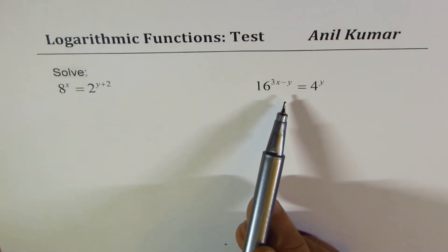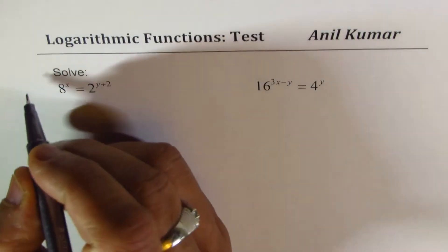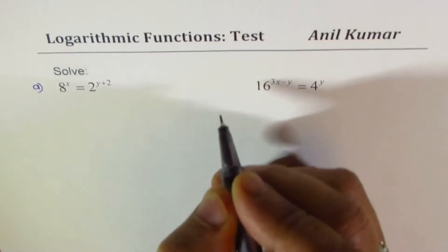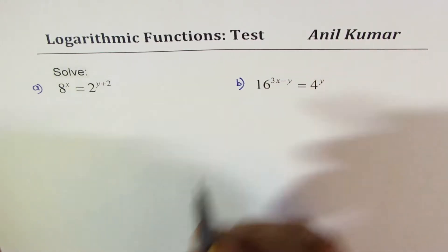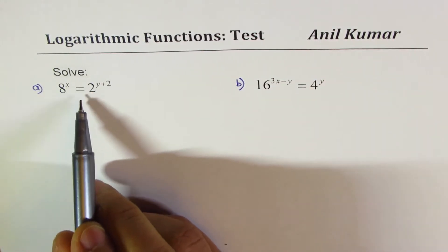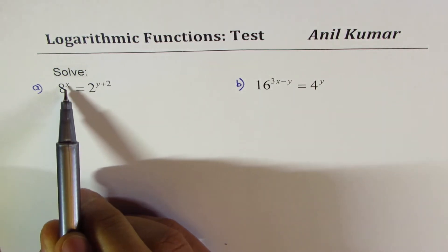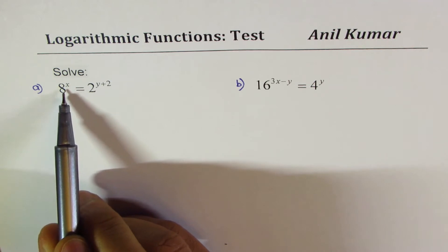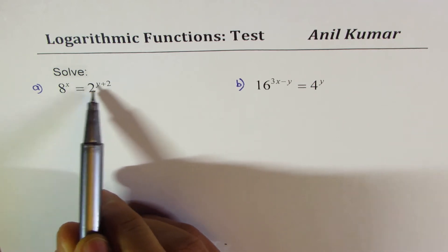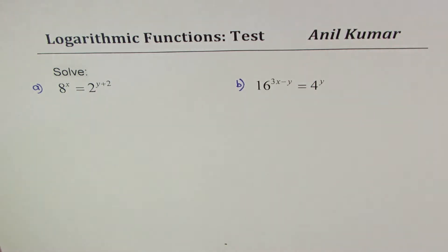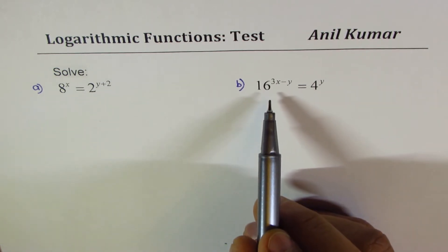We need to solve these two exponential equations. Let me label them a and b. For problem a: 8 to the power of x equals 2 to the power of y plus 2. Note the exponents are x for 8 and y plus 2, so we are dealing with two different variables here as exponents.